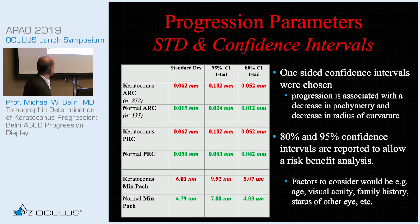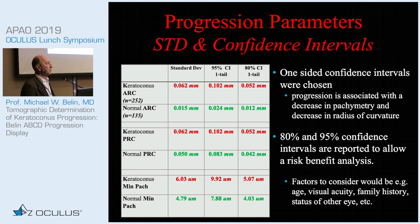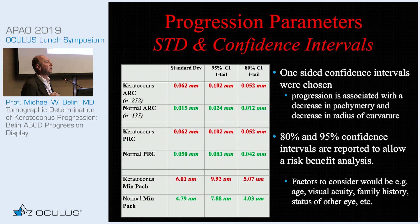Here you can see what we came up with for the anterior radius of curvature. The red represents the keratoconic population and the green the normal population. Exactly as you would expect, the keratoconic population shows noisier measurements — just as with IOL calculations on keratoconic patients. This is what we used to establish our confidence intervals.